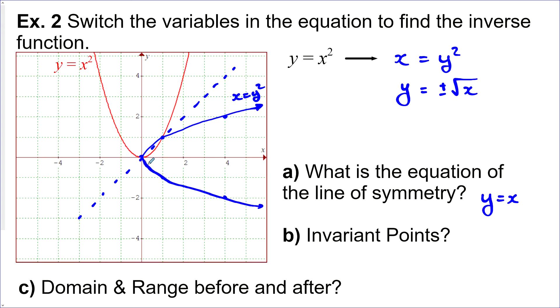Okay, invariant points. Well, those would be on the line of reflection. So they'd be at the origin and at one, one. And that's because, I mean, hey, if we switch zero and zero, well, it's going to look the same.